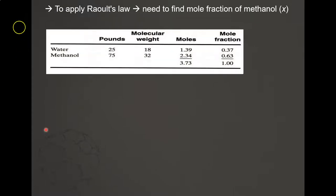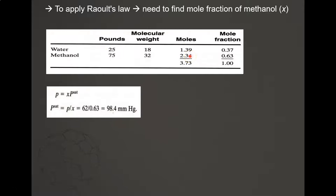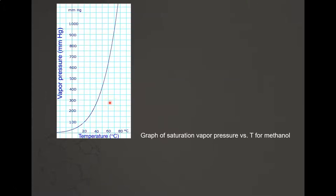There are only two materials in this mixture: water and methanol — 25% water and 75% methanol. Finding the mole fraction gives methanol a mole fraction of 0.63. The pressure is 62 mmHg; dividing by the mole fraction gives a P_sat of methanol equal to 98.4 mmHg. Now look back at the graph.